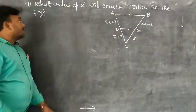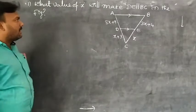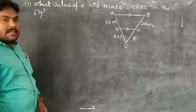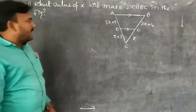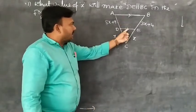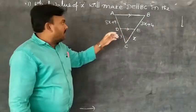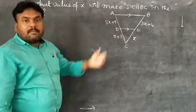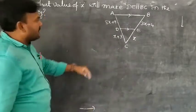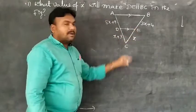Now, this problem: what value of X will make DE parallel to BC in the figure? We know the BPT theorem — what is it? If a line is drawn parallel to one side of a triangle, intersecting the other two sides in two distinct points, then the points divide those sides in the same ratio. That means here, observe: AD by DC equal to BE by EC.